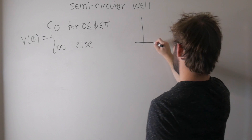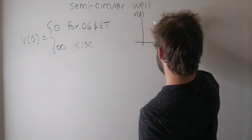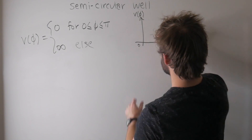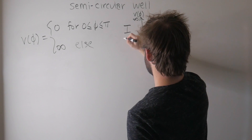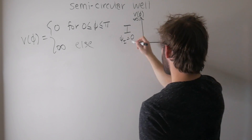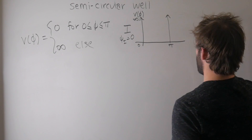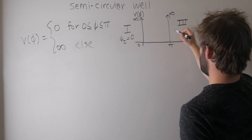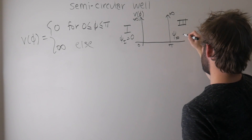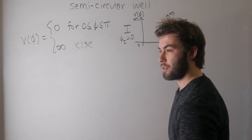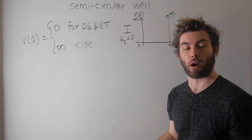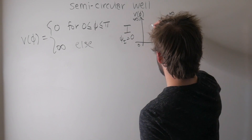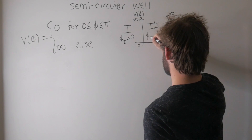If we draw this out — here's V as a function of phi, here's zero, here's pi. The particle has no chance of being found in the region before zero, so it's infinitely high there — we'll call this region one, where the wave function should be zero. At pi we have another infinitely tall wall — region three — where the wave function is also zero. The only interesting part is region two, between zero and pi, and that's what we're going to be solving for.